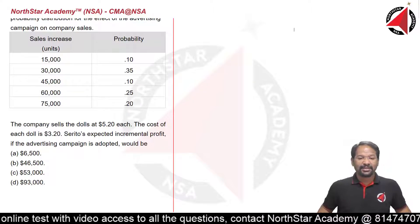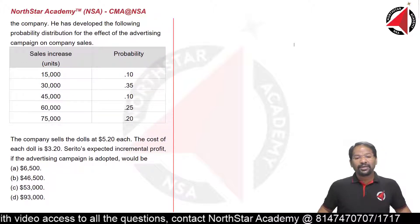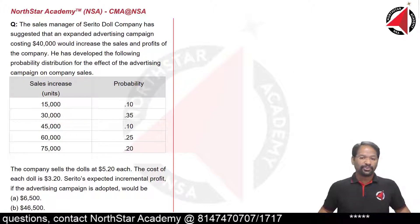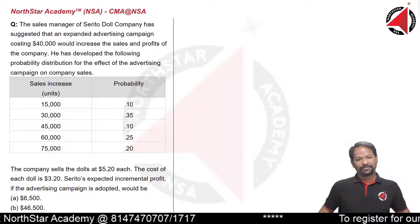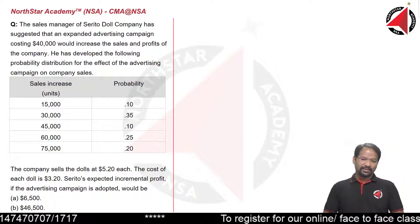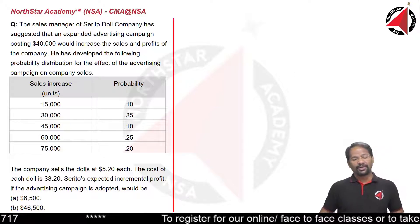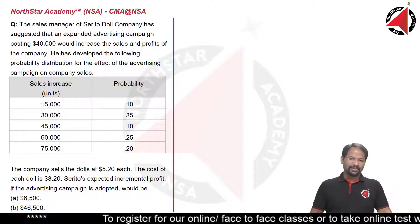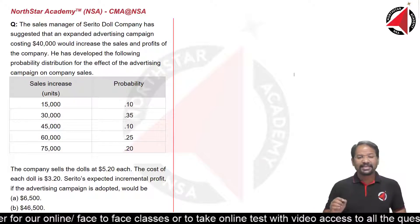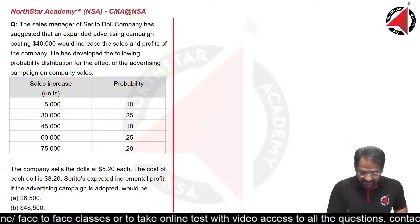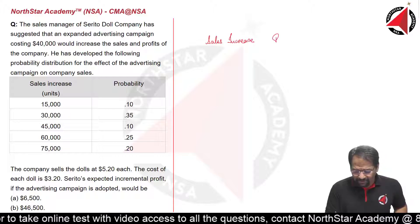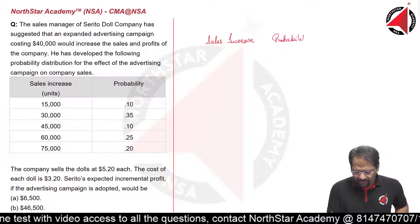We need to calculate incremental profits. To calculate profits, we need to first know what is the incremental number of units the company is expecting to sell. So to calculate that, we first need to find the expected number of units. You can use a calculator, or multiply sales increase by probability directly. In an exam, always use a calculator for calculating this.